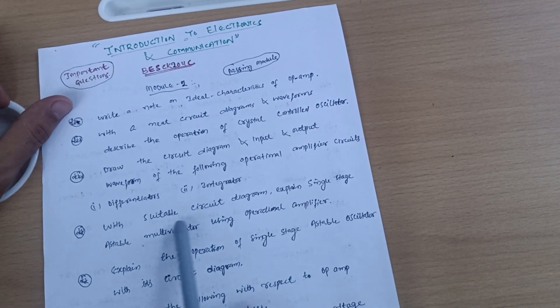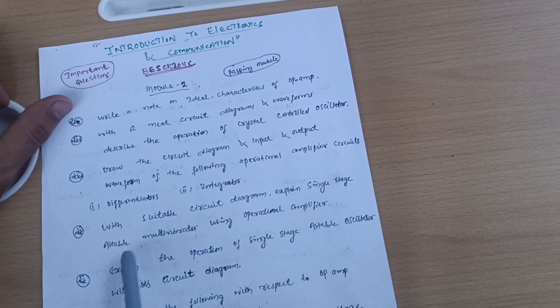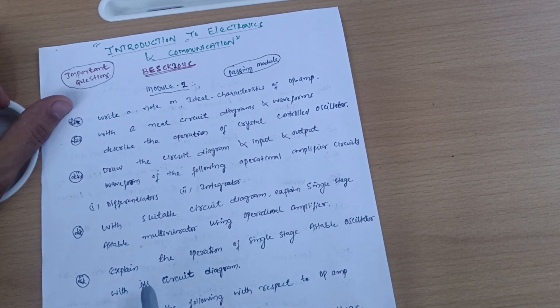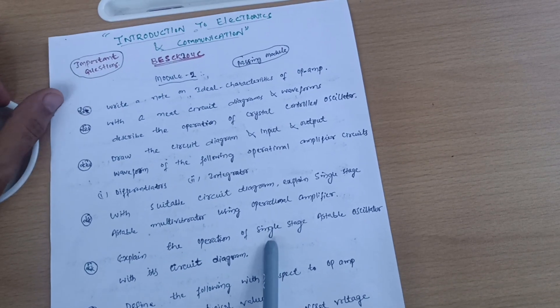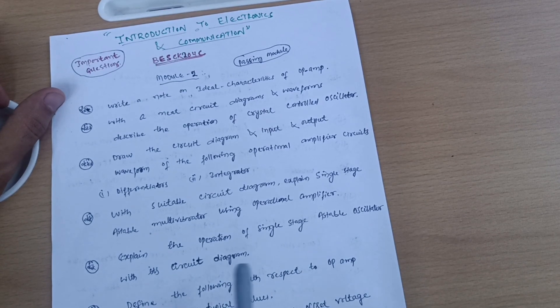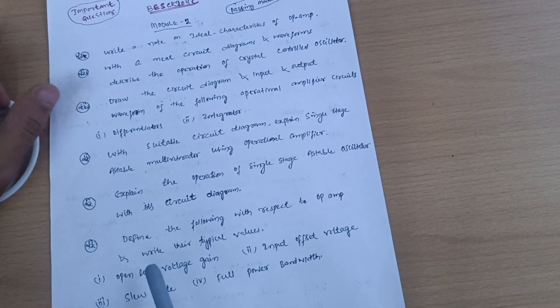Other questions include: with suitable circuit diagram, explain single stage astable multivibrator using operational amplifier, and explain the operation of single stage astable oscillator with circuit diagram.